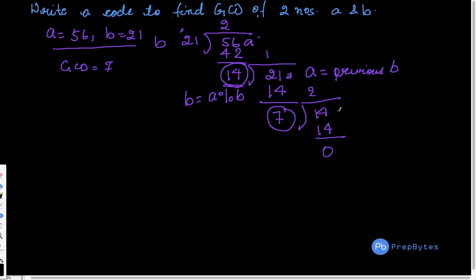Now again what is happening here? My latest A is previous B which was 14 and my B became A mod B. So this was this particular A mod B. So we kept on doing this until we got 0.